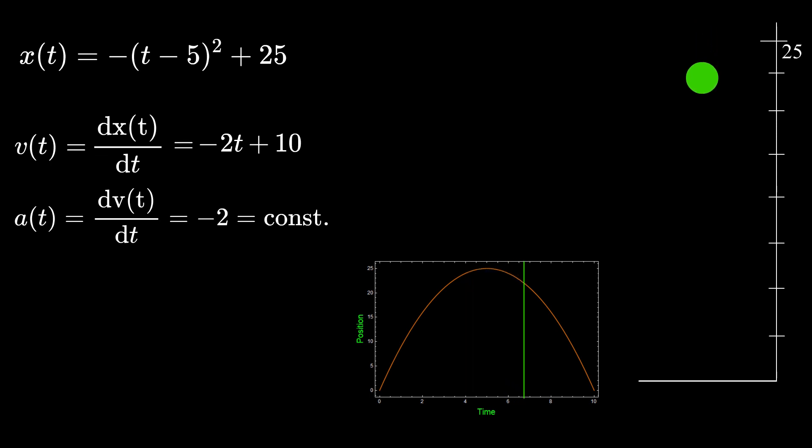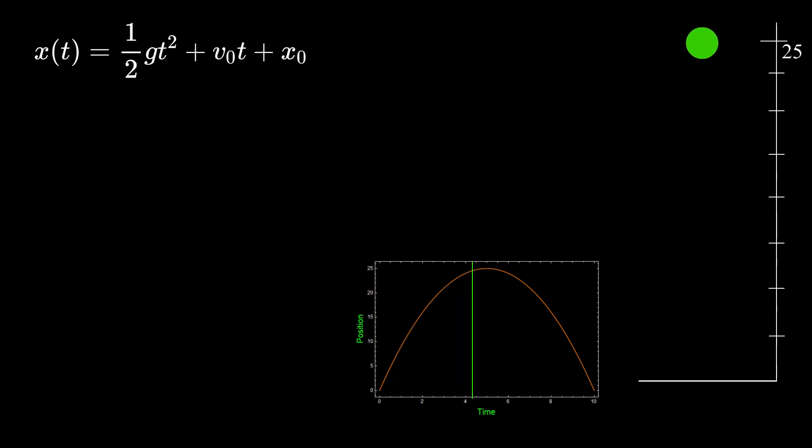You might be familiar with this expression for position function of a particle in a constant gravitational field that looks like this. The velocity and acceleration are just first and second derivatives of this function with respect of time.